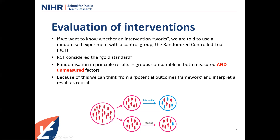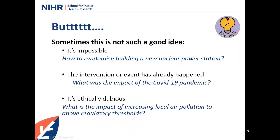That all sounds very good and we should all do this — except sometimes it's not a good idea. For example, it's impossible: how do you randomize building a new nuclear power station? Or the intervention has already happened — we didn't anticipate COVID-19, so we have to do this retrospectively. Or it's ethically dubious — for example, increasing local air pollution above regulatory limits to see if that has a negative impact on public health. In those situations we have to come up with some other idea.